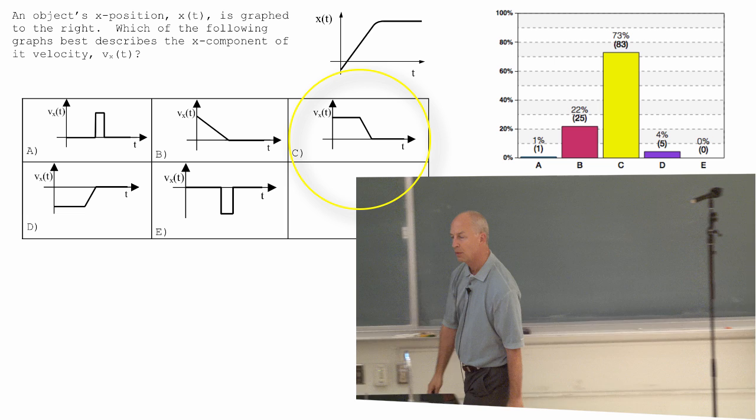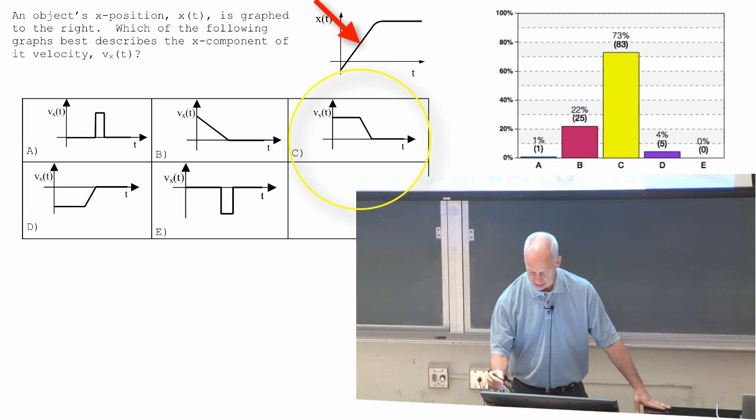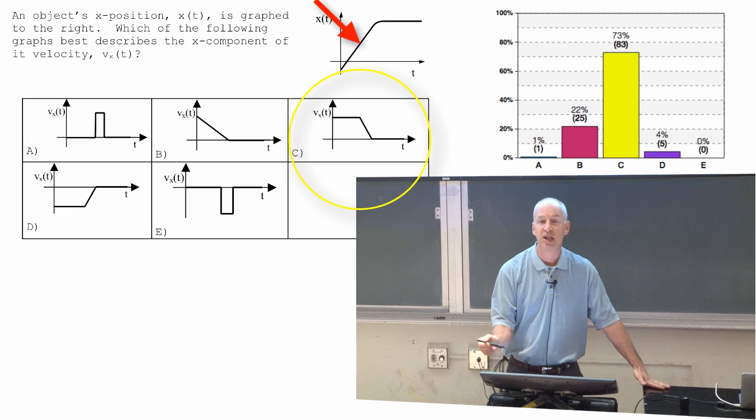So, me moving to the right at a constant speed. This shows x getting larger and larger and larger, if somebody's moving to the right.